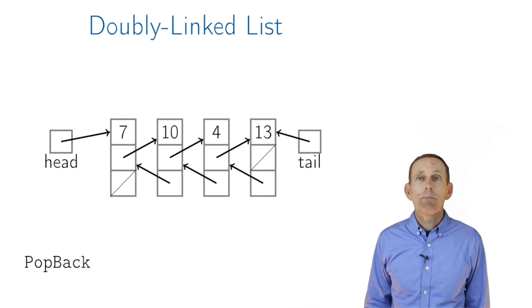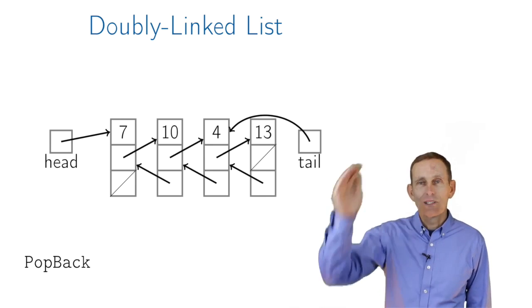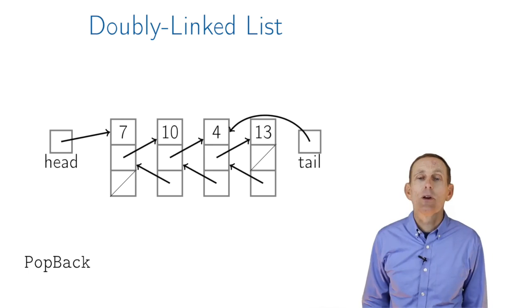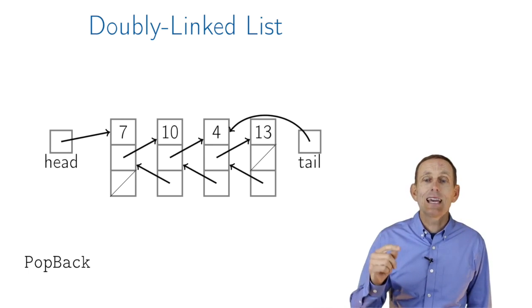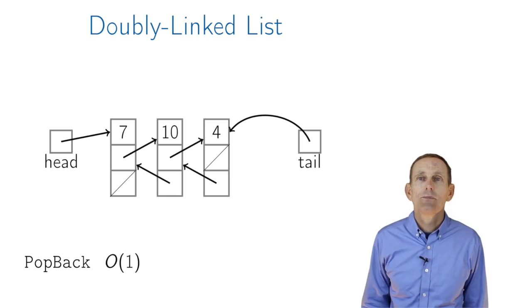So that means if we're trying to pop the back, that's going to work pretty well. What we're going to do is update the tail pointer to point to the previous element, because we could get there in order 1 operation. And then update its next pointer to be nil, and then finally remove nil. So that's order 1.